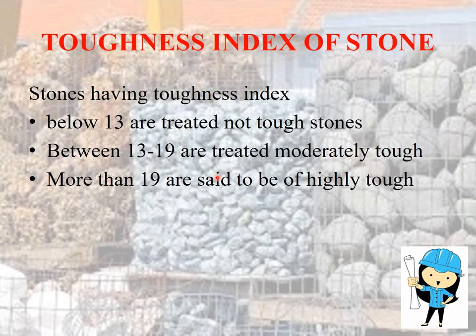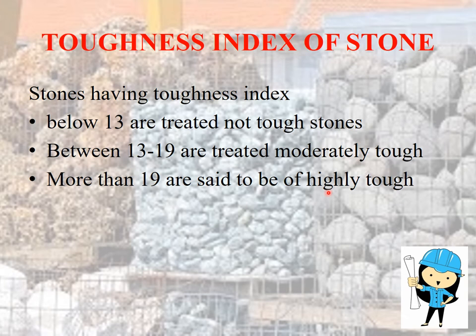Now we are going to see about the toughness index of the stone. The toughness index is determined by the impact test. Based on the result, stones are classified into three types: if the toughness value is below 13, it is treated as non-tough stone; if it is between 13 and 19, it is treated as moderately tough; and if it is more than 19, it is said to be highly tough stone.